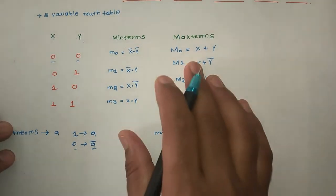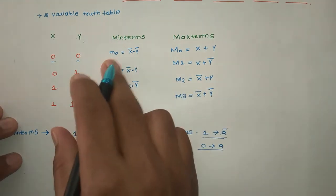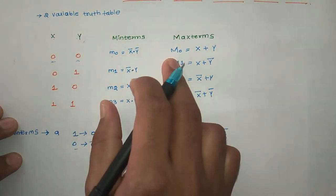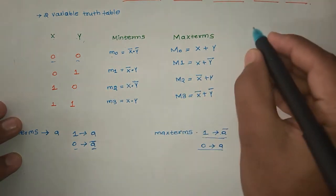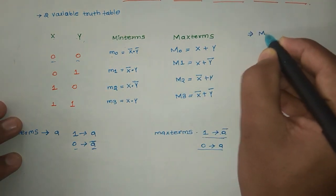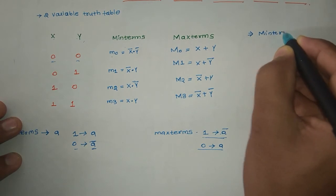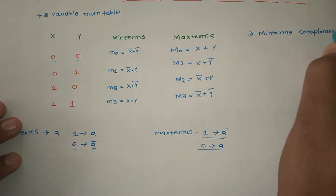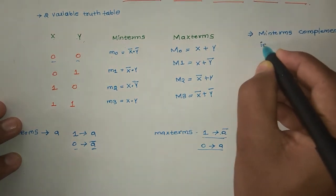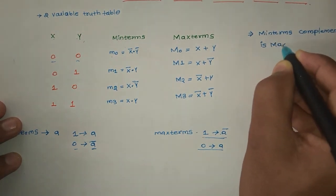So this is the max term representation. So you can observe similarity in terms: min terms complement is max term.